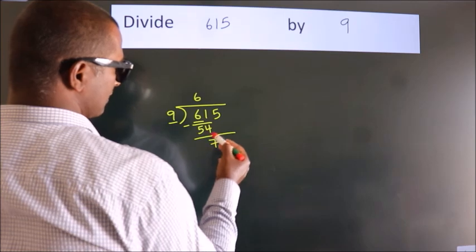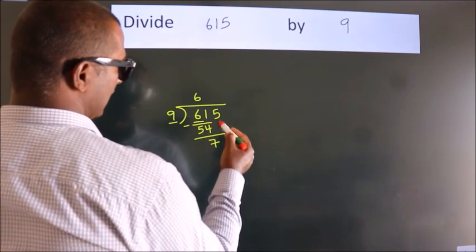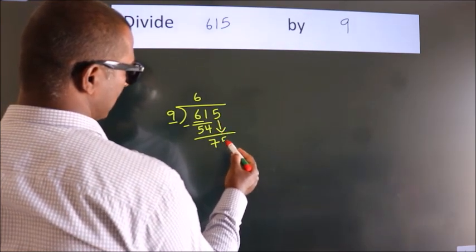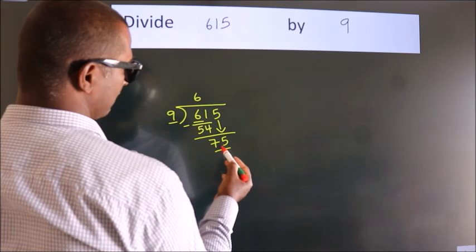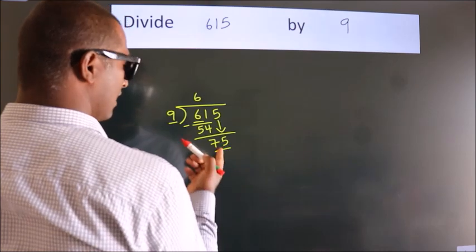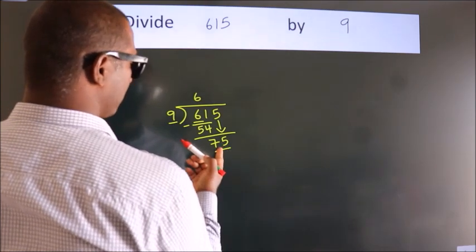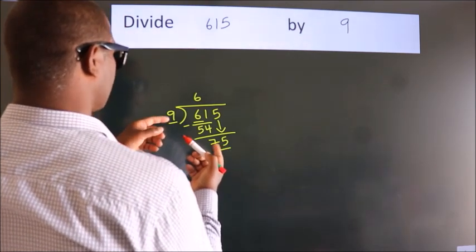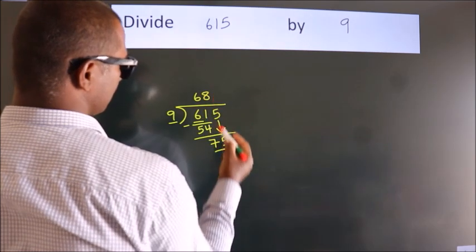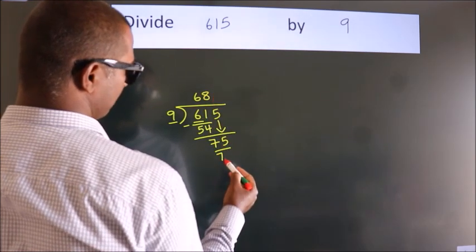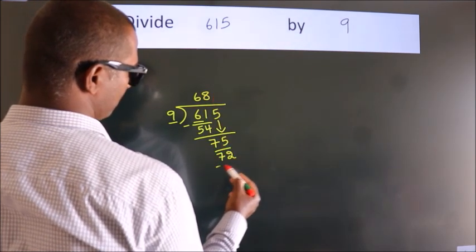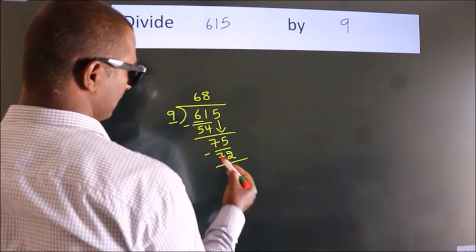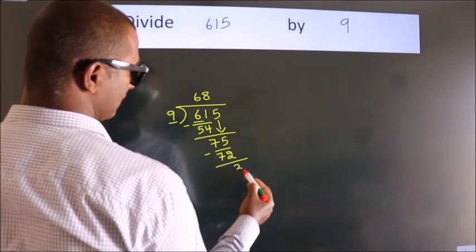After this, bring down the beside number. So 5 comes down, giving us 75. A number close to 75 in the 9 times table is 9×8=72. Now we subtract and we get 3.